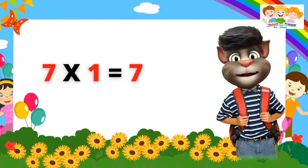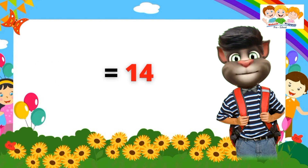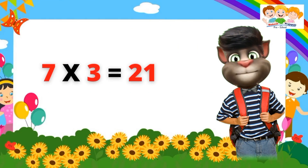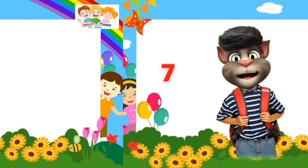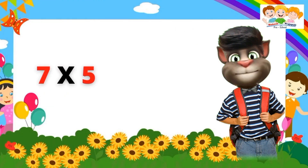Table of Seven. Seven one's are seven. Seven two's are fourteen. Seven three's are twenty-one. Seven four's are twenty-eight.